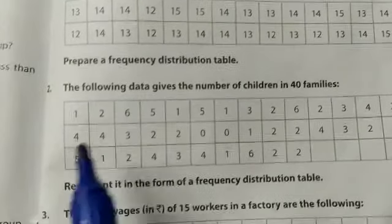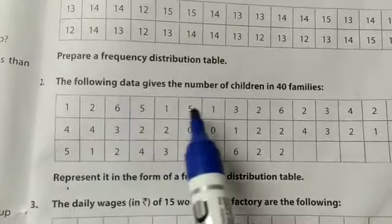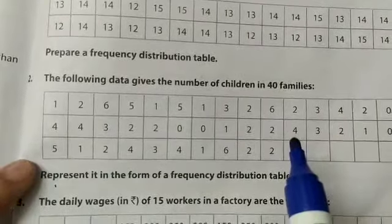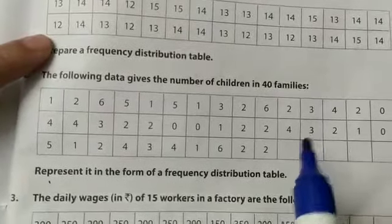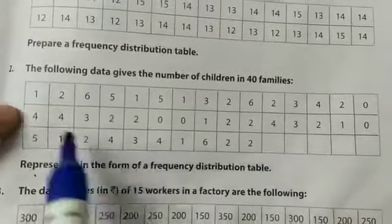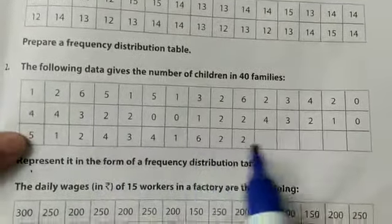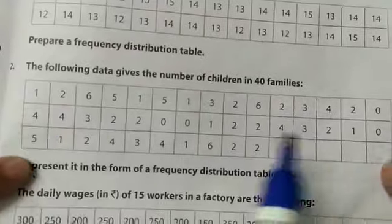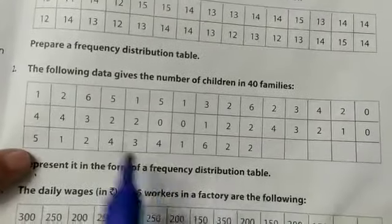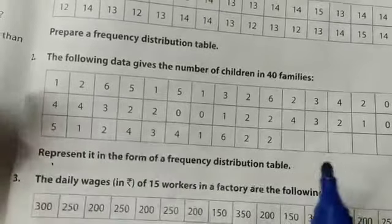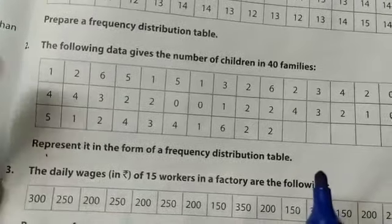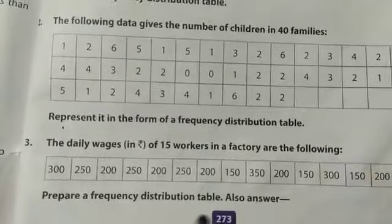Question 2: The following data gives the number of children in 40 families. This is like question 1. You have to make a frequency distribution table. Minimum value is 0, maximum value is 6. Just like you did question first, question second will be the same. Try question number 3.